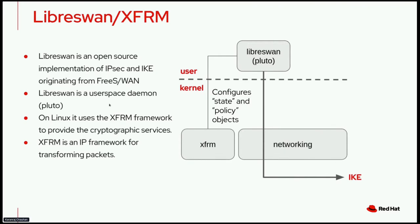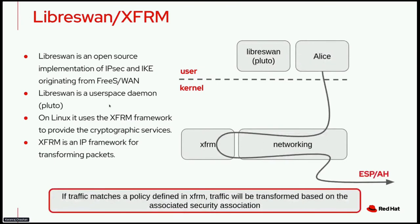On the next slide, we add an application called Alice. If Alice is communicating with host B, Alice will send traffic to host B as normal. However, XFRM will intercept that traffic because it matches a policy in XFRM. It will encrypt it based on the security association configured by LibreSwan, and then send that ESP or AH traffic to the remote host in a secure manner.